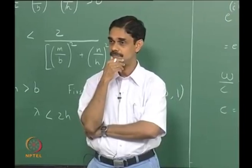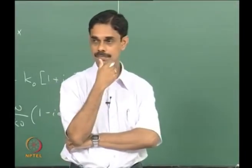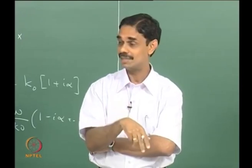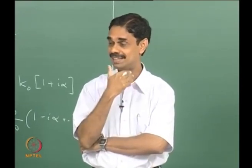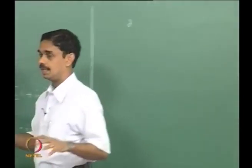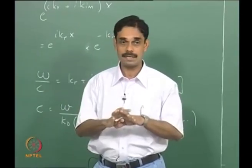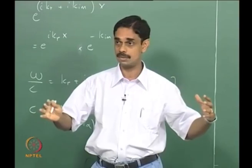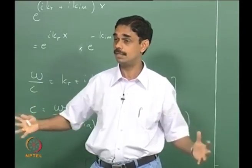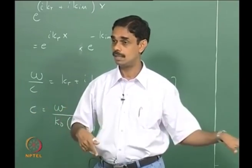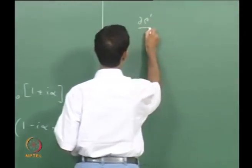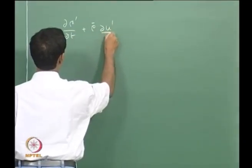The other question was: with a mean velocity, do you get the same wave equation? For a constant mean flow, you can travel in the frame of the mean flow where the regular wave equation holds, then translate back. Starting from the continuity equation: ∂ρ'/∂t + ρ̄·∂u'/∂x = 0, replacing ρ' = p'/c², and the momentum equation: ∂u'/∂t + (1/ρ̄)·∂p'/∂x = 0.